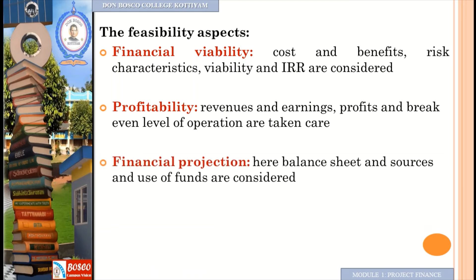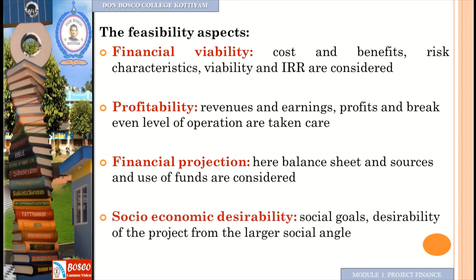The third feasibility aspect is financial projection, where the balance sheet, source and use of funds, cash flow statements — including cash inflow and outflow — are considered. And finally, social economic desirability assesses the desirability of the project from a larger social angle.